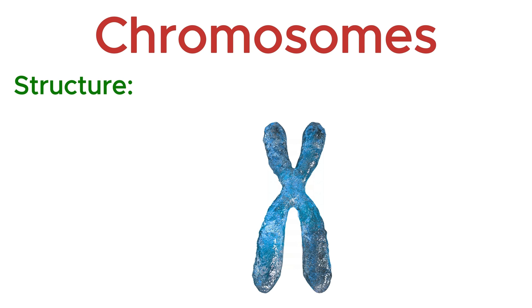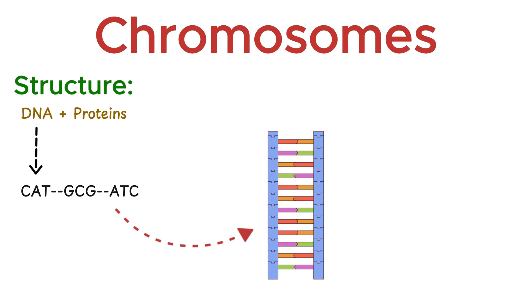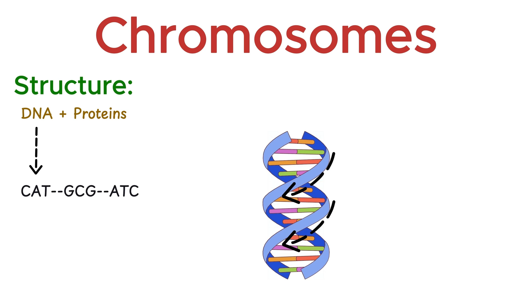Chromosomes are made up of DNA and proteins. DNA makes up most of its structure. It is the molecule that carries your genetic information in the form of codes. It has a double helix shape — two long strands twisted around each other.